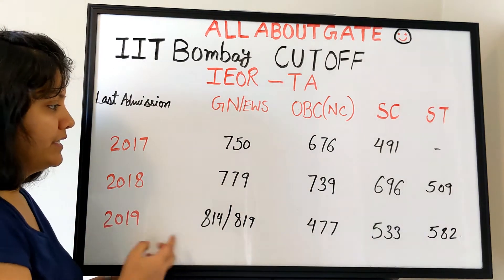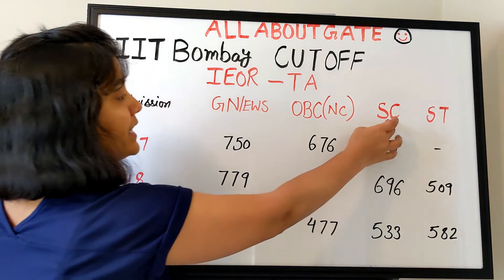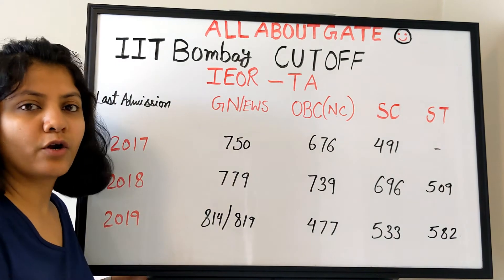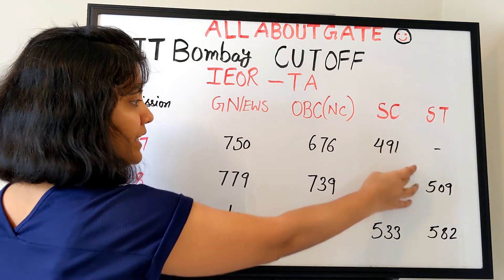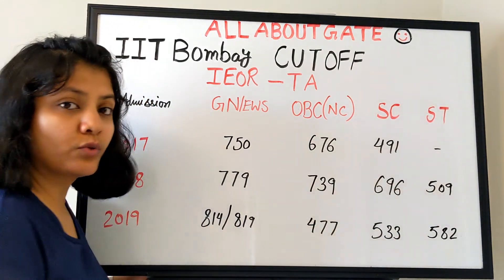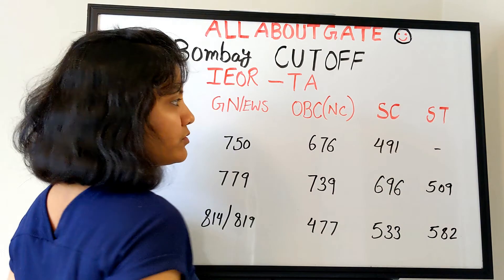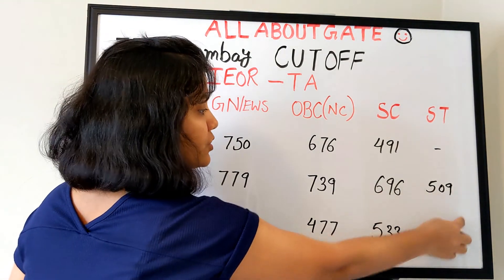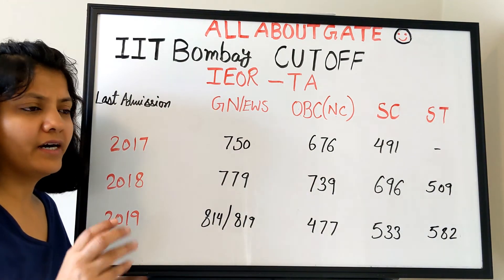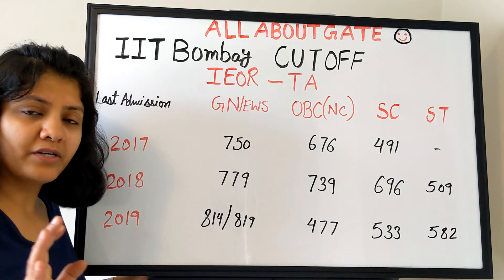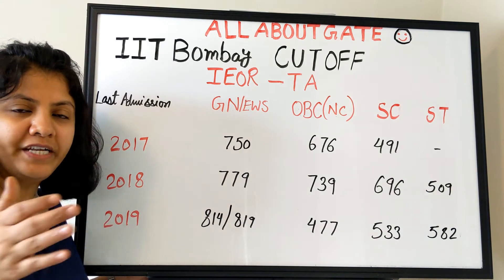For OBC in 2019 it was 477 — there is a decline, and I'm not sure of the reason. For SC category: 491 in 2017, 696 in 2018, and 533 in 2019 — again a decline. For ST category, we don't have 2017 data; for 2018 it is 509 and for 2019 it is 582. This data gives a small idea, even if not comprehensive.